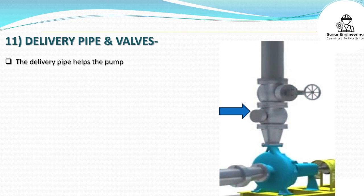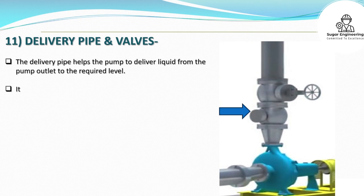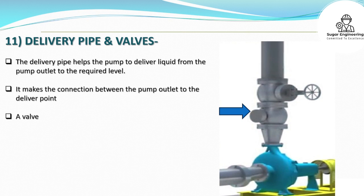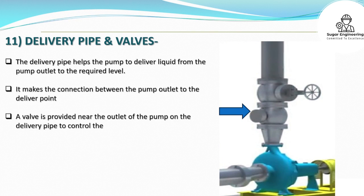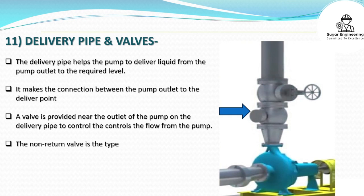Delivery pipe and valves: The delivery pipe helps the pump to deliver liquid from the pump outlet to the required level, making the connection between the pump outlet and the delivery point. A valve is provided near the outlet of the pump on the delivery pipe to control the flow, and the non-return valve is typically used as the delivery valve.